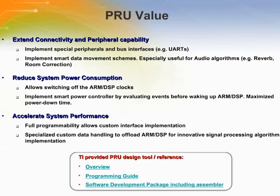The PRUSS provides several benefits. It can be used to extend connectivity and enhance peripheral capabilities on AM1X devices. Customers can implement special peripherals such as a 9-bit UART and bus interfaces. The PRU can also be used to implement smart data movement schemes, such as circular DMA. The PRUSS can also be used as a smart power controller, allowing you to switch off the clock and the ARM, only waking up the core when specific events are detected. The PRUSS can be used to offload data handling tasks from the ARM, freeing up those cores for other tasks. The full programmability of the PRU allows customers to implement custom interfaces.